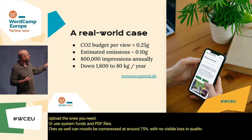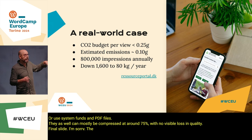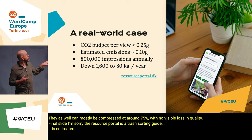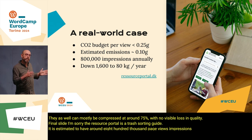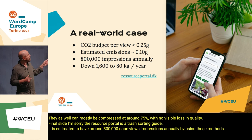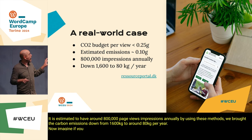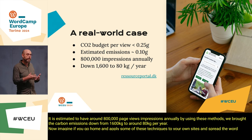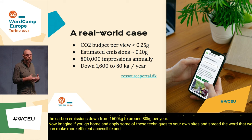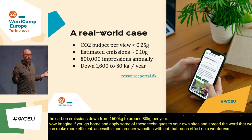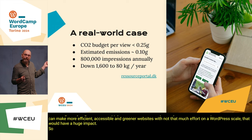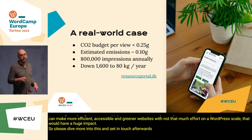Final slide. The resource portal is a trash sorting guide estimated to have around 800,000 page views annually. By using these methods, we brought the carbon emissions down from 1,600 kilograms to around 80 kilograms per year. Imagine if you go home and apply some of these techniques to your own sites and spread the word that we can make more efficient, accessible, and greener websites with not that much effort on a WordPress scale — that would have a huge impact. Please dive more into this and get in touch afterwards if this has caught your interest. Thank you.